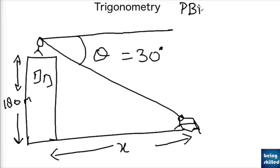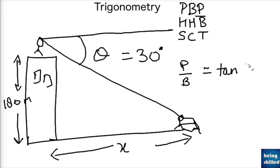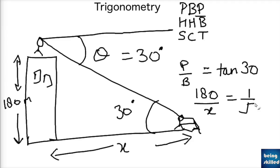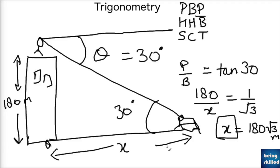We know perpendicular, base, and hypotenuse relationships: sin, cos, tan. Since we know the perpendicular and need to find the base, we use tan — that is, perpendicular over base equals tan theta. The angle is 30 degrees because the alternate angles are equal. So tan 30 = 180 / x, and tan 30 is 1/√3, so x equals 180√3 meters. This is the required distance between the tower and the animal.